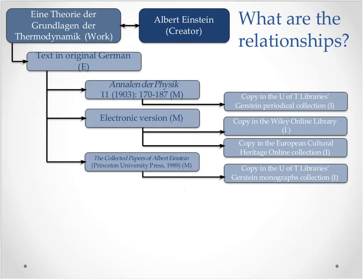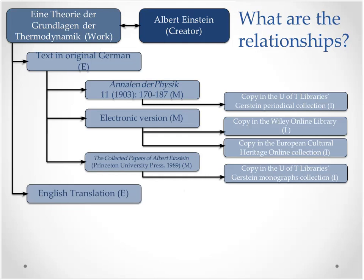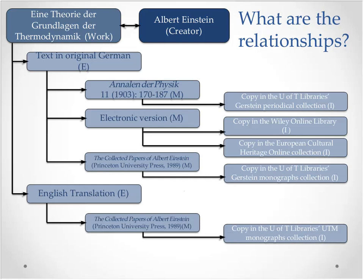The electronic version, another manifestation of the article, is available through our subscription to Wiley Online and also through open access through the European Cultural Heritage Online collection. The article was then republished by Princeton University Press in 1989 as a monographic volume, as part of the collected papers, in the original language of publication — German — and was available in our monographic collection. Princeton then republished the English language collection the same year, and we have that copy in a different library. There are 44 libraries at U of T, so we have different resources in different libraries.